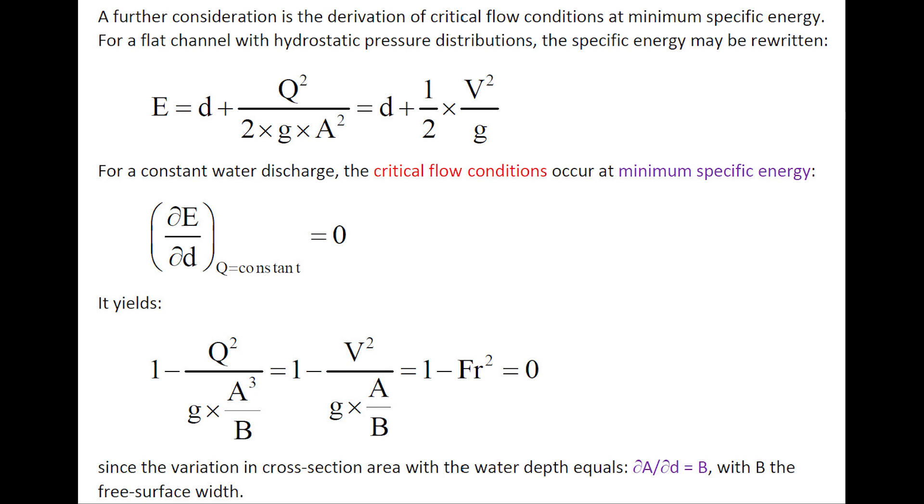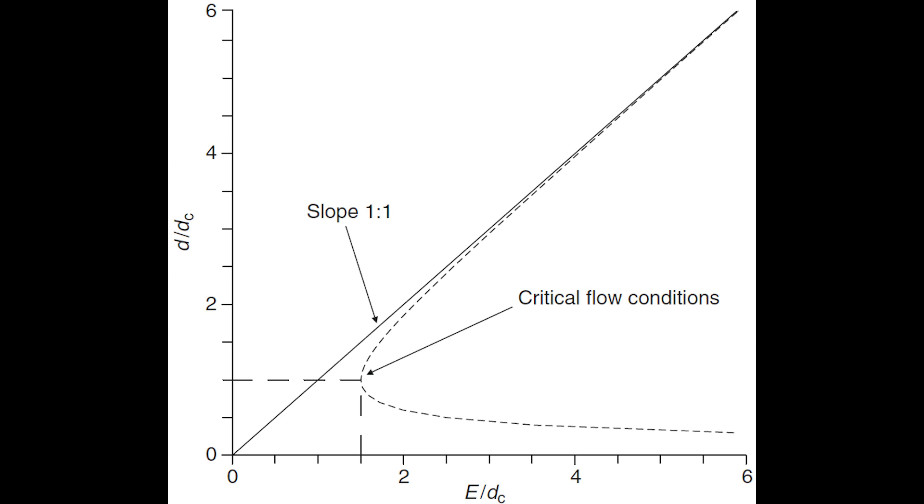A further consideration is the derivation of critical flow conditions at minimum specific energy. The critical flow conditions occur when the specific energy is minimum, which leads to a condition as 1 minus the Froude number squared equals 0, with this graph illustrating the relationship between specific energy and water depth.